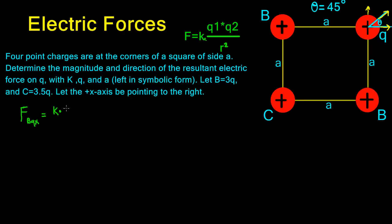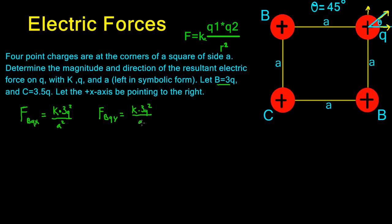So we get K times B, which we said was 3Q, so K times 3Q times Q, giving us 3Q squared, because 3Q times Q equals 3Q squared. We divide by A squared. That is the force on Q from B in the x direction. For the y direction, the force of B on Q is the same thing — K times 3Q squared divided by A squared.